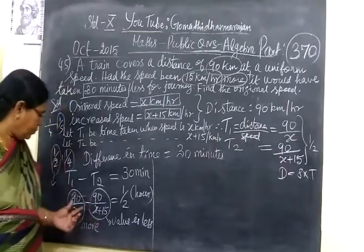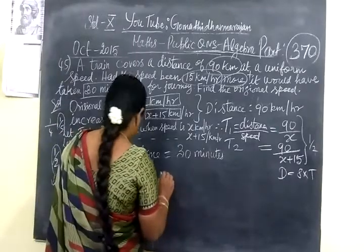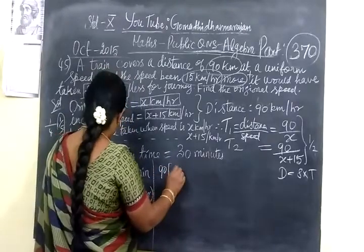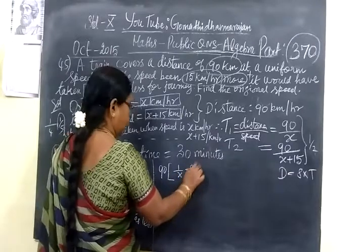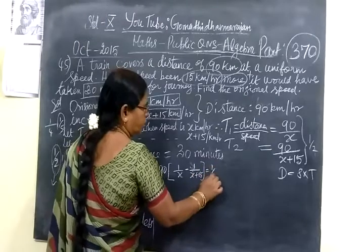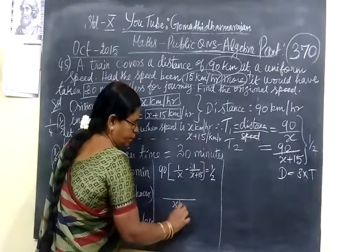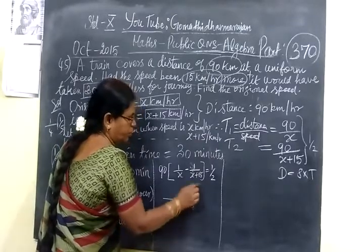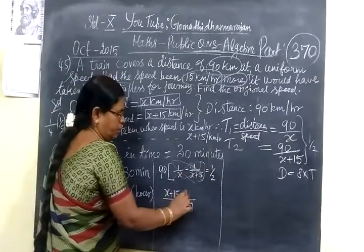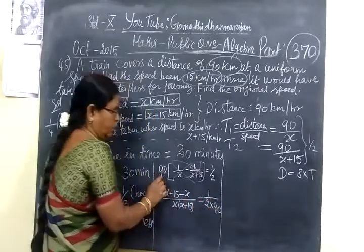We are taking this is greater and this is smaller. Now you take the LCM. 90 is common and divided. So 90 times (1/x minus 1/(x+15)) equals 1/2. Take the LCM x(x+15). Using cross method, x+15 minus x equal to 1/2 into 90.